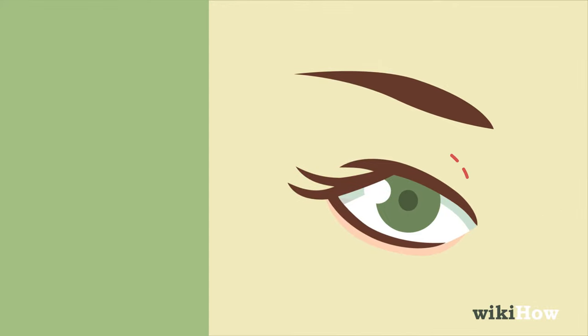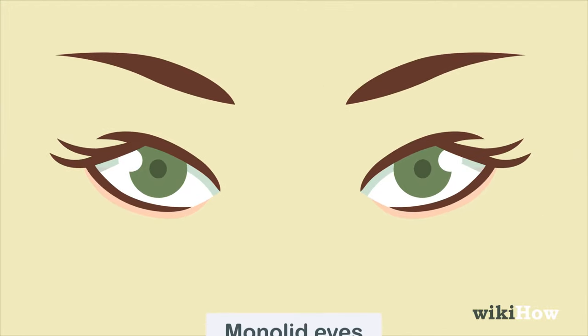If your upper eyelids don't have a crease, that means you have monolid eyes.